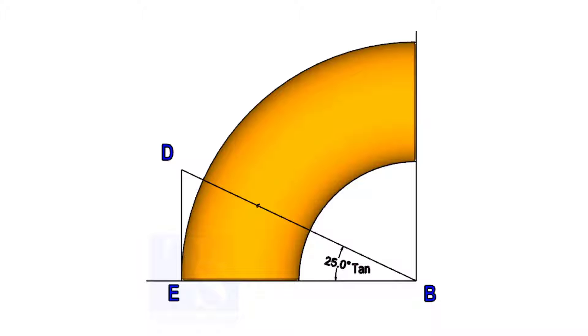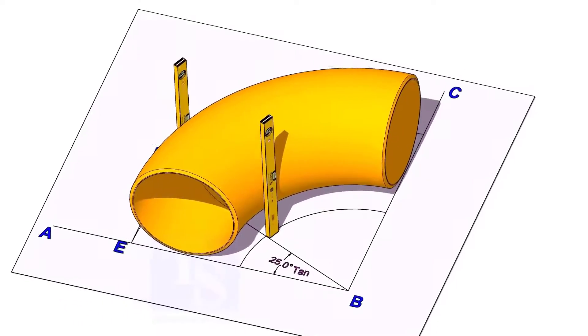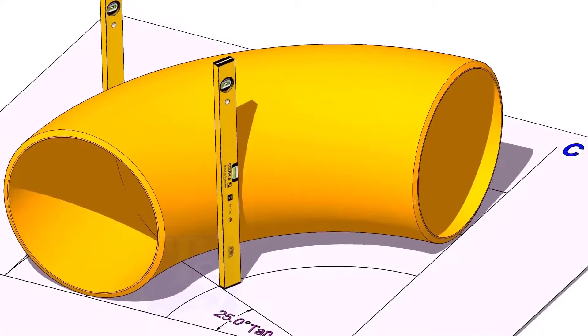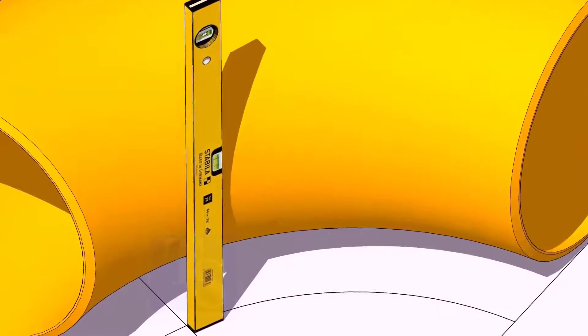Now, put the elbow exactly on the layout as shown. Hold two large level bottles at the edge of the elbow on both sides vertically, and strike a mark where the level bottle edge touches the elbow.